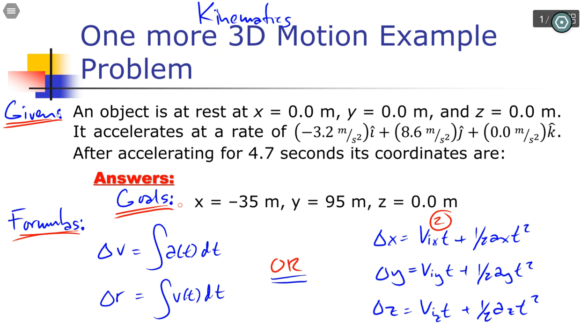First of all, the object is at rest. What does that mean? It simply means that the initial velocity is (0.0, 0.0, 0.0) m/s. If you're lazy, you can write the units there, which means the units apply to everything inside the parentheses.